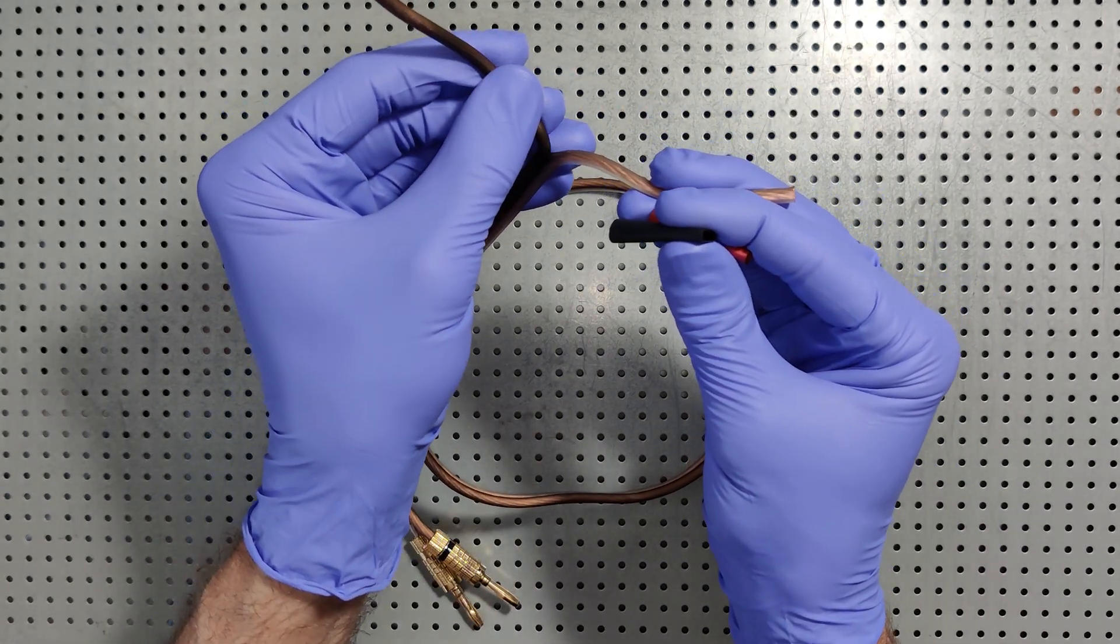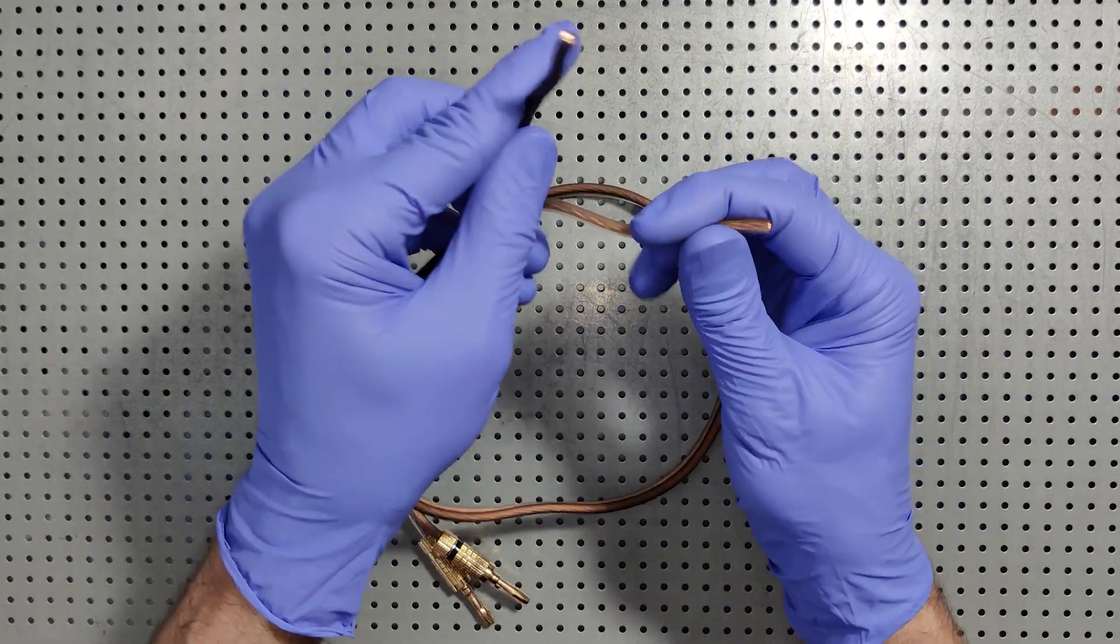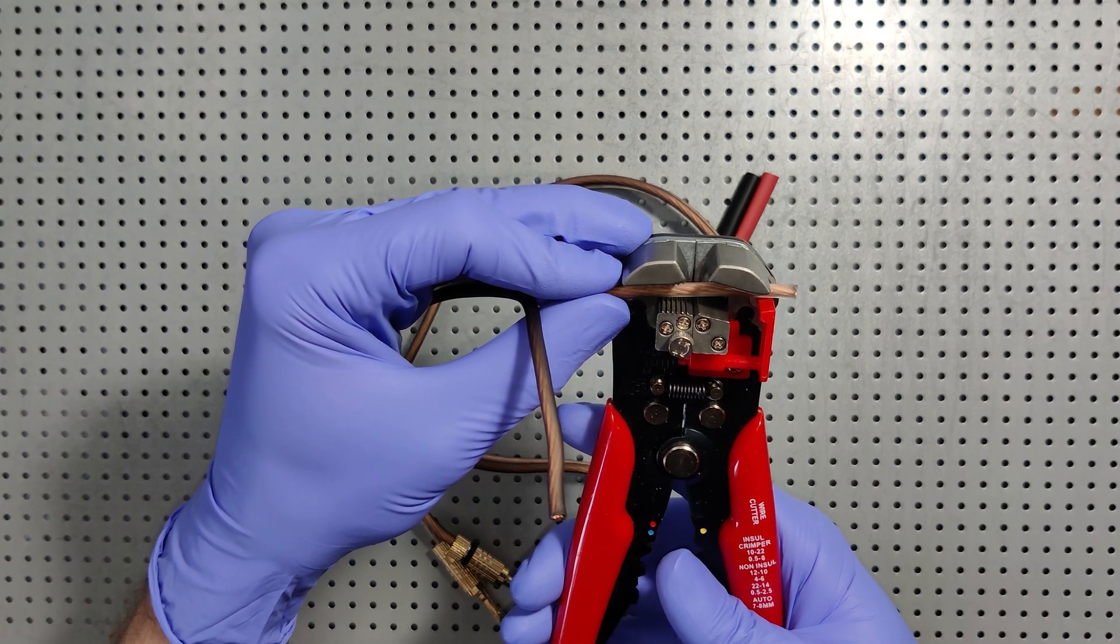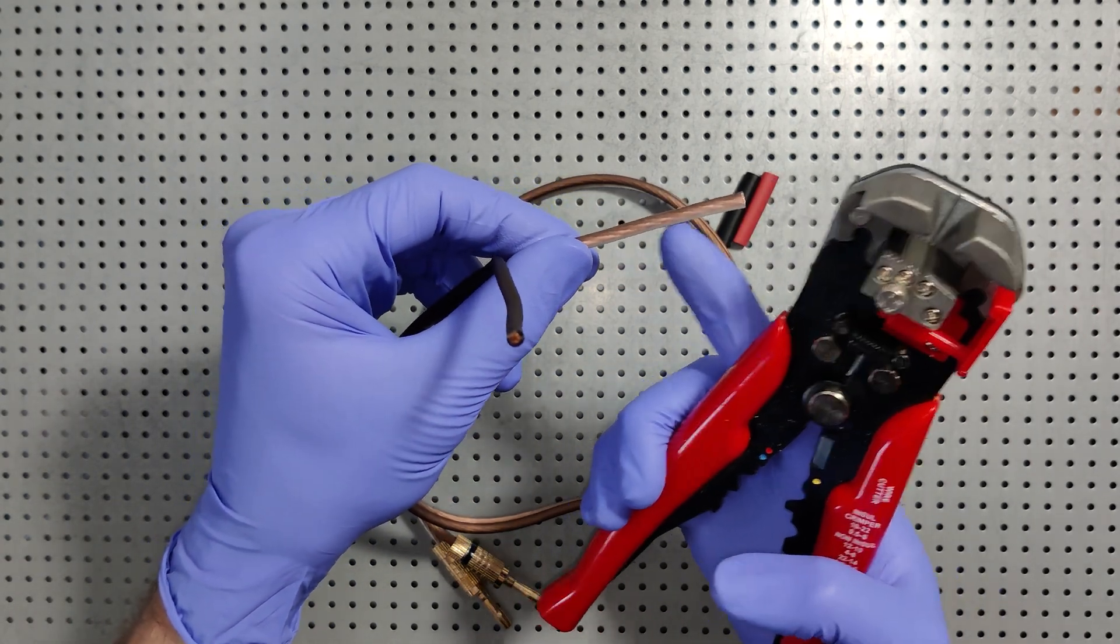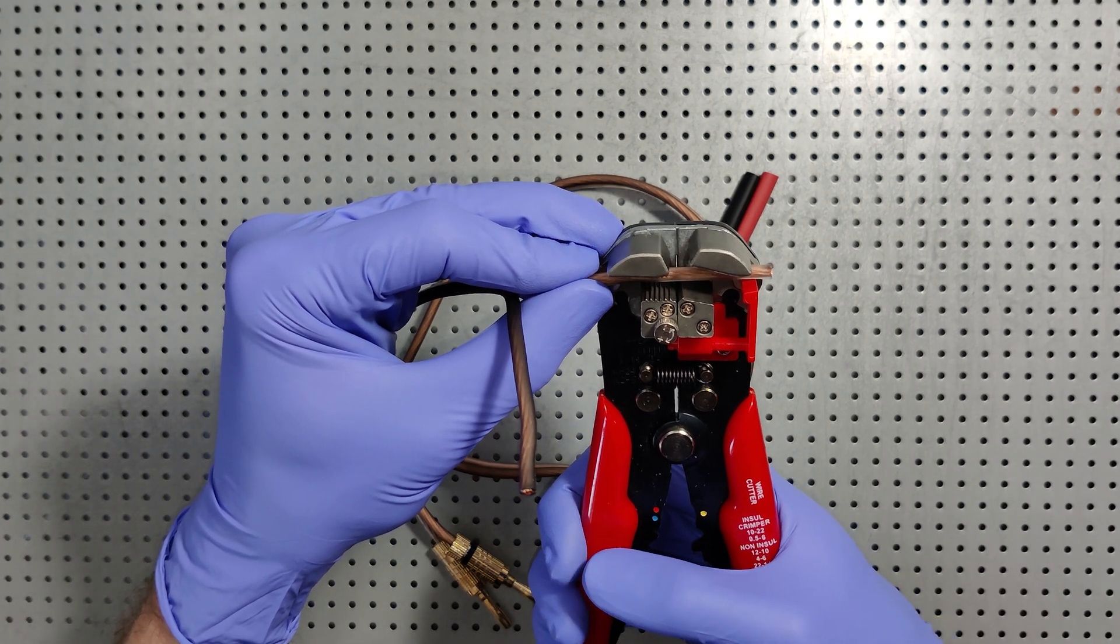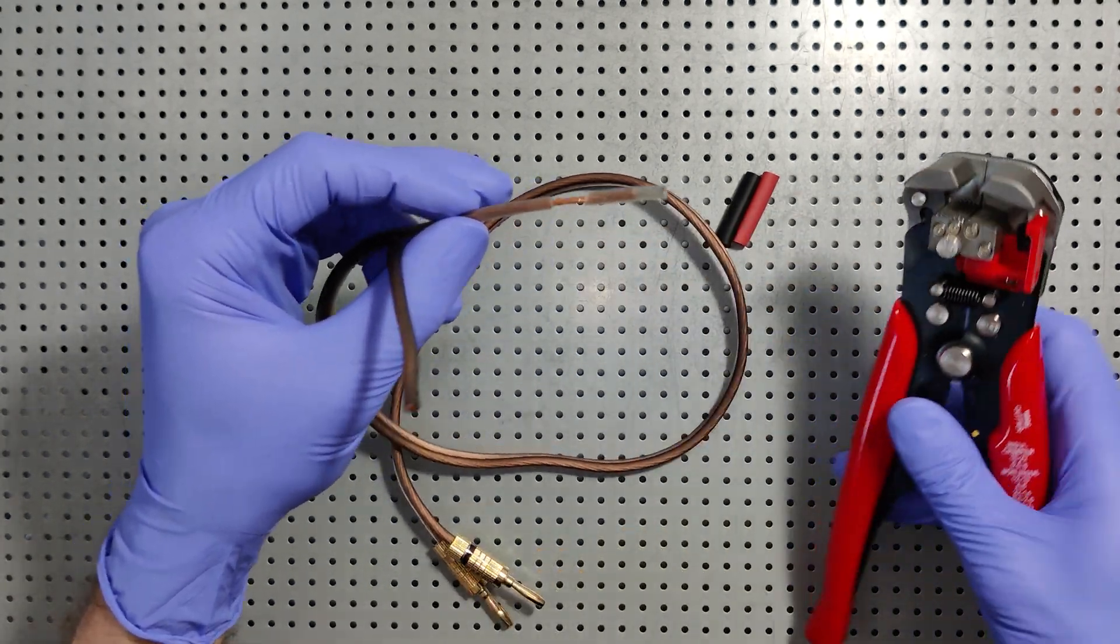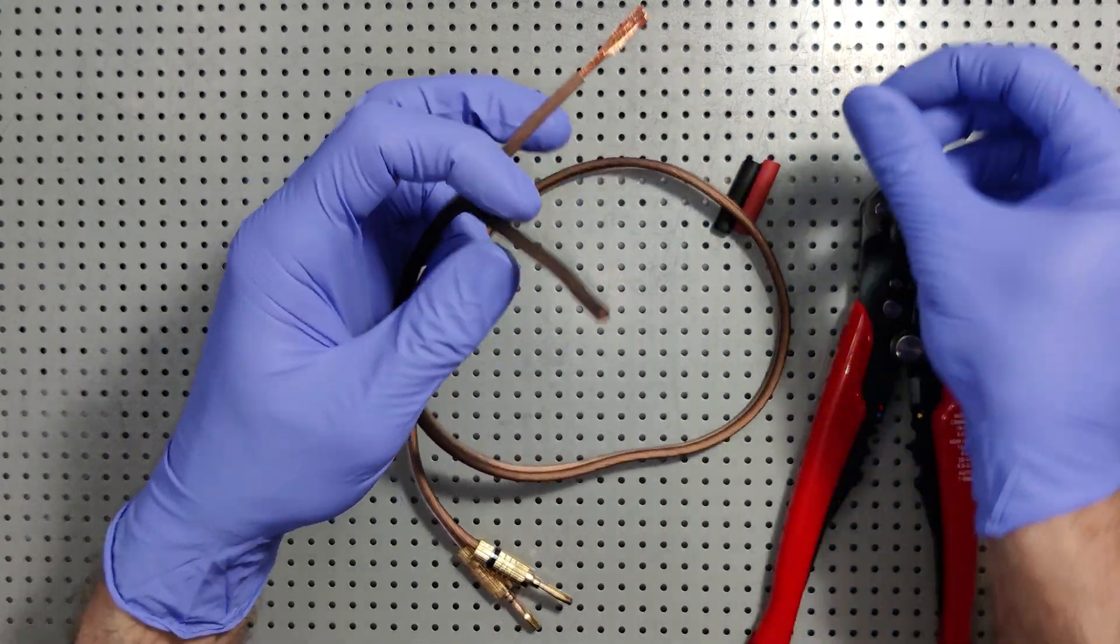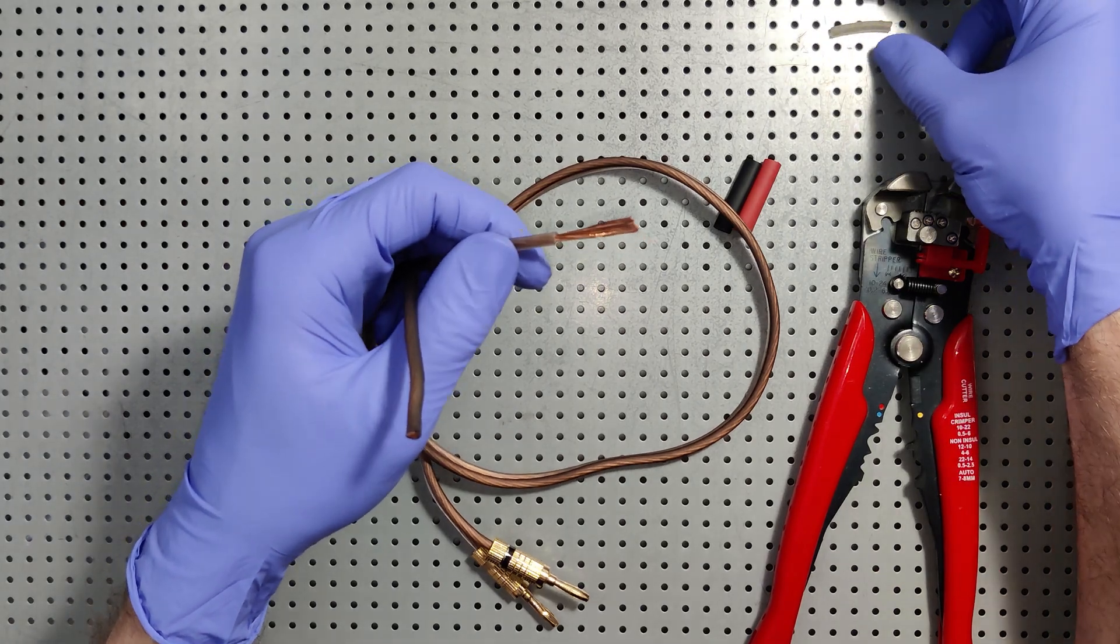First and foremost I'm going to cut enough of this. I want to give myself a generous amount of length because we're going to be wrapping the copper around itself. Let's see if this is enough. I may need a little bit more but let's see if this does the trick.